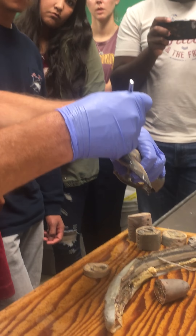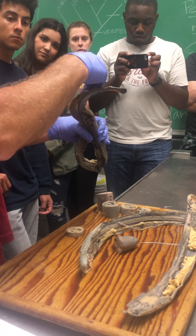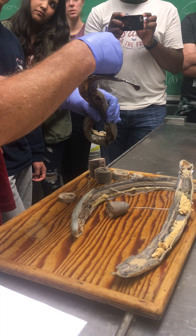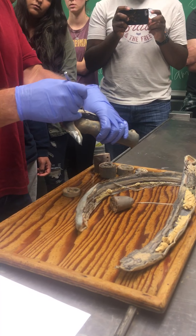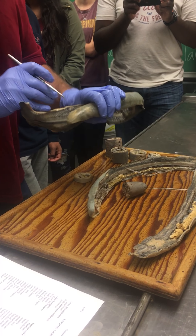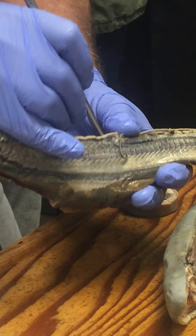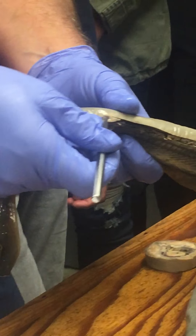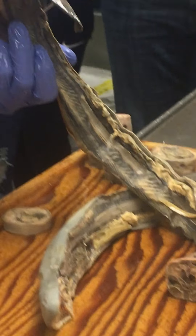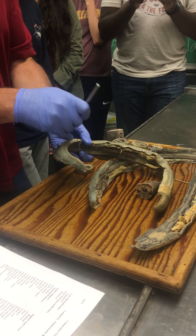That finger-like process would be the urogenital papilla — urinary and genital products, sperm in particular in the males, come out at the urogenital papilla. The anus is not coming out of the urogenital papilla; it's an opening in front of the urogenital papilla. You can extend the probe forward into it, and that's the end of the digestive tract.